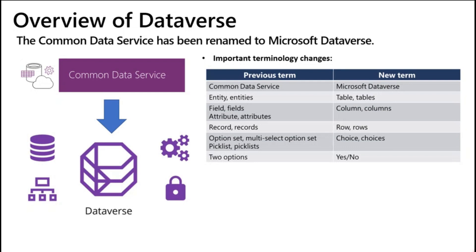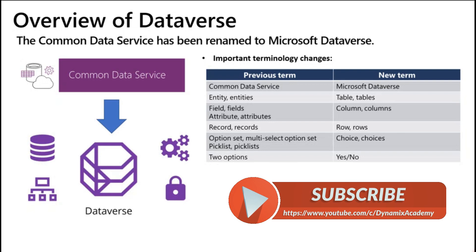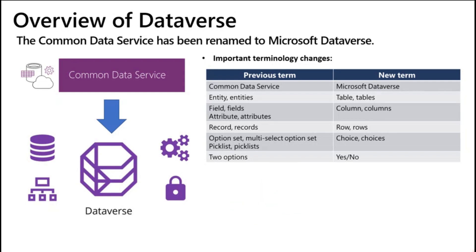Earlier we used to call them entity or entities — now those are called table or tables. What was earlier known as field, fields, attribute, or attributes — both referred to the same thing in previous terminology — now those are called column or columns. And earlier when we used to refer to records, whenever you created records of any particular entity, now those are known as row or rows.